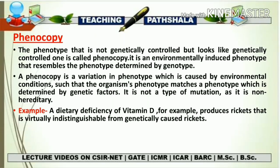So there are two types of rickets: one is genetically induced — certain genes in your body help form rickets — and another is caused by deficiency of vitamin D. Both diseases look the same, causing confusion about the causative agent. The first causative agent is genetic, where your genes are responsible. The second is environmental — a deficiency of vitamin D can also produce the same condition. This confusion between what appears genetically controlled but is actually environmentally caused is the overall phenomenon of phenocopy.